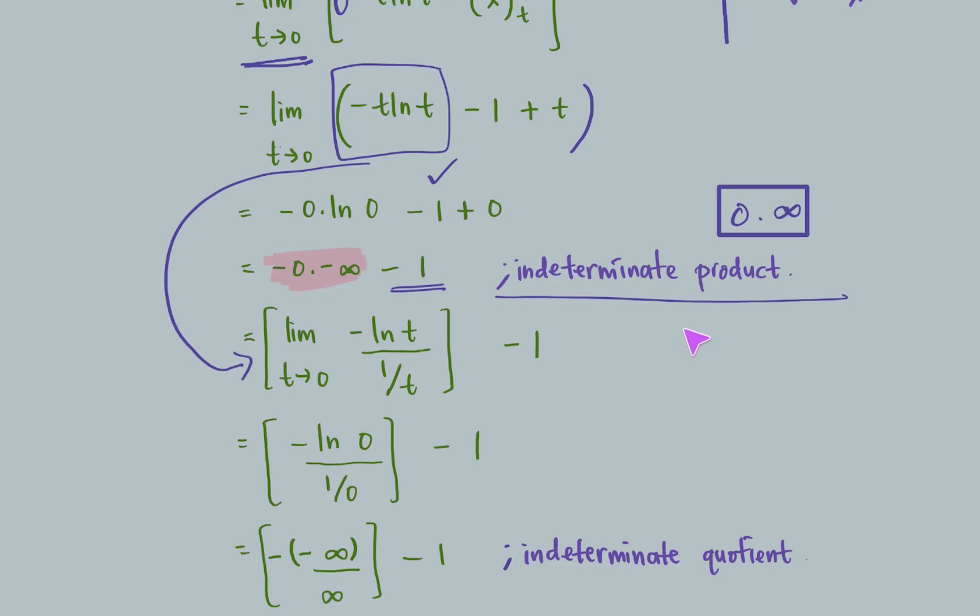Remember it should be f(x) divided by 1 over g(x), or g(x) divided by 1 over f(x). And it's easier for us to choose the algebra to be in the denominator. So it will be negative ln t divided by 1 over t.